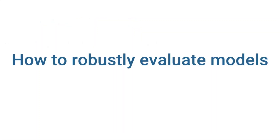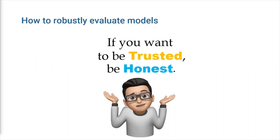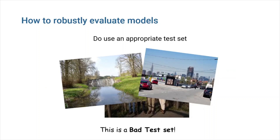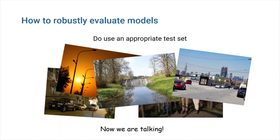How to robustly evaluate models: you must have valid results from which you may draw trustworthy conclusions in order to contribute to development in your field. It's all too simple to evaluate machine learning models unfairly, muddying the waters of academic progress. Do use an appropriate test set. The data in the test set should not overlap with the training set and it should be representative of the wider population. For example, if all of our data including the test set is collected on a sunny day, then our model will probably not generalize on other situations, so our test set should contain photos taken in other circumstances as well.